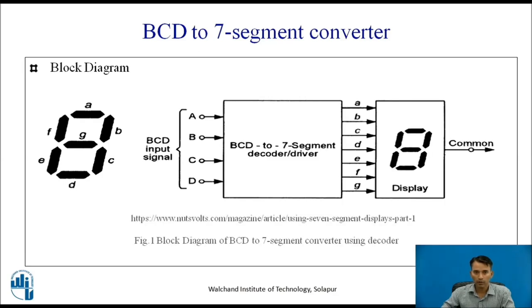This is the block diagram for BCD to 7-segment converter using decoder IC. There is a BCD to 7-segment decoder or driver IC which has 4 BCD inputs named as ABCD. BCD to 7-segment decoder or driver has 4 BCD inputs and 7 outputs which are a, b, c, d, e, f, g, which are connected to 7-segment display. One of the parts is common, that common part may be anode or cathode.